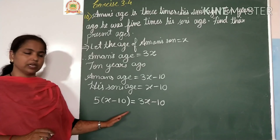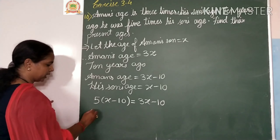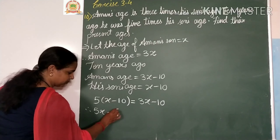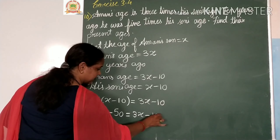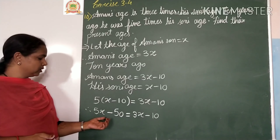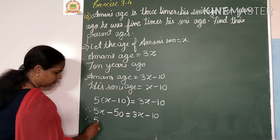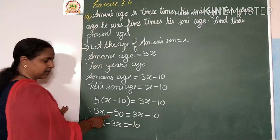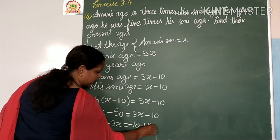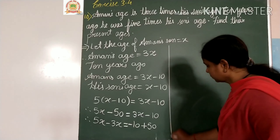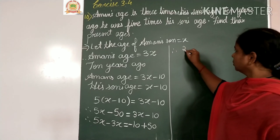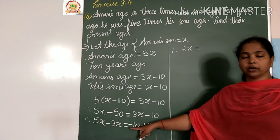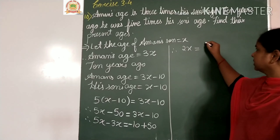We multiply 5 into the whole bracket: 5 into x is 5x, and 5 into 10 is 50, so 5x minus 50 equals 3x minus 10. Taking variables to one side: 5x minus 3x equals minus 10 plus 50. So 2x equals 40, where the greater number's sign is kept.